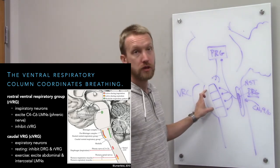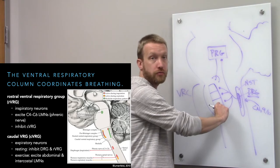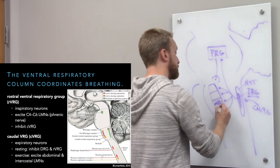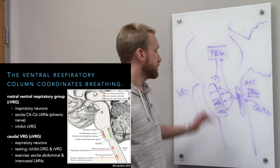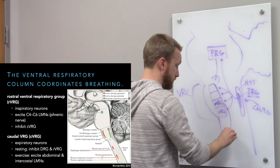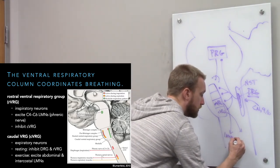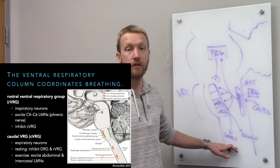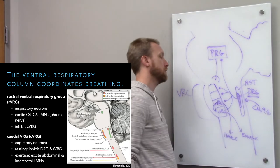The ventral respiratory column can be divided into a couple of parts. Starting at the bottom, we have the ventral respiratory groups: the rostral ventral respiratory group and the caudal ventral respiratory group. These two groups talk to lower motor neurons. The rostral ventral respiratory group causes us to inhale; the caudal ventral respiratory group is active when we exhale. They inhibit each other.